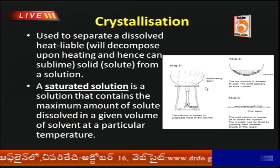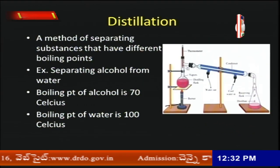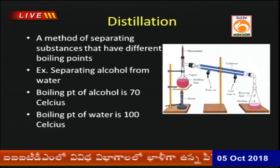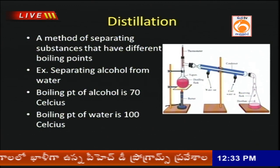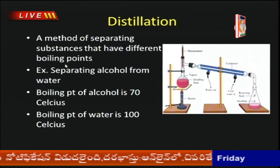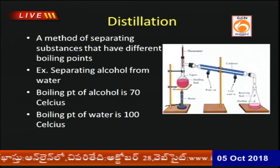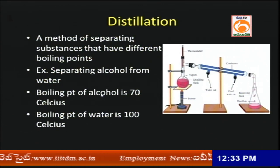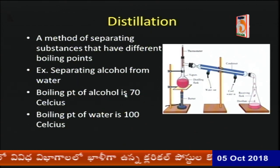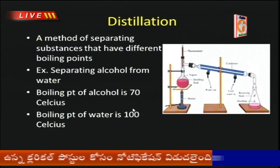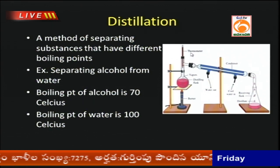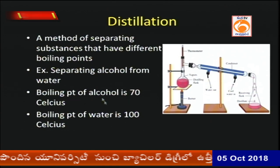Distillation is a very important separation technique used for purification and separation of liquids with different boiling points. For example, to separate alcohol from water: the boiling point of alcohol is 70°C and water is 100°C. When the mixture is heated and the temperature reaches 70°C, alcohol gets separated first and water remains.